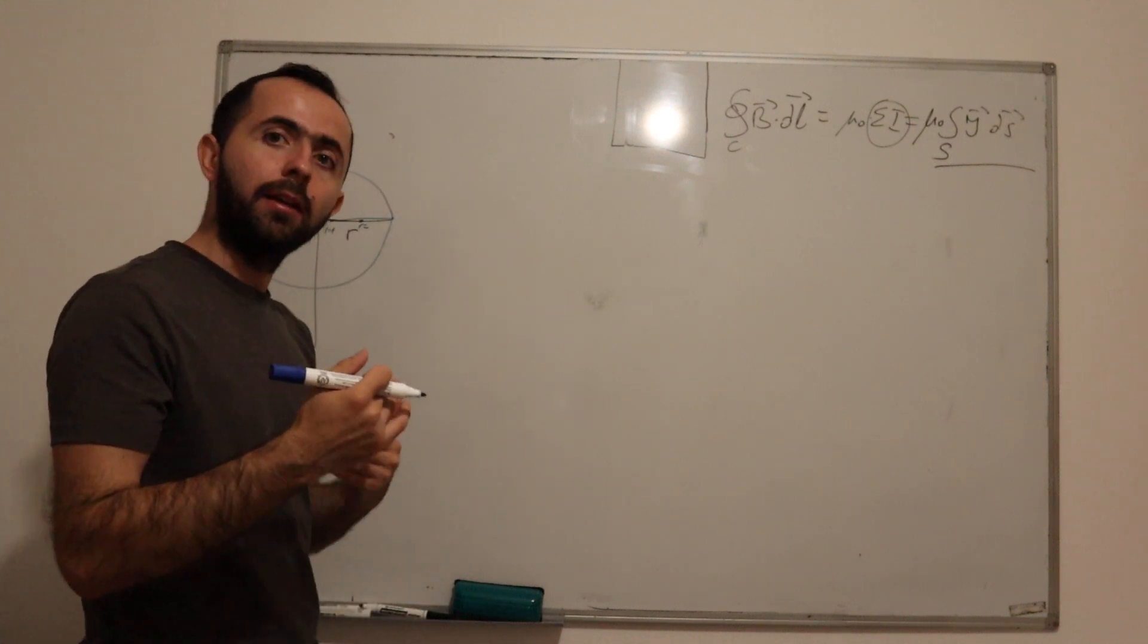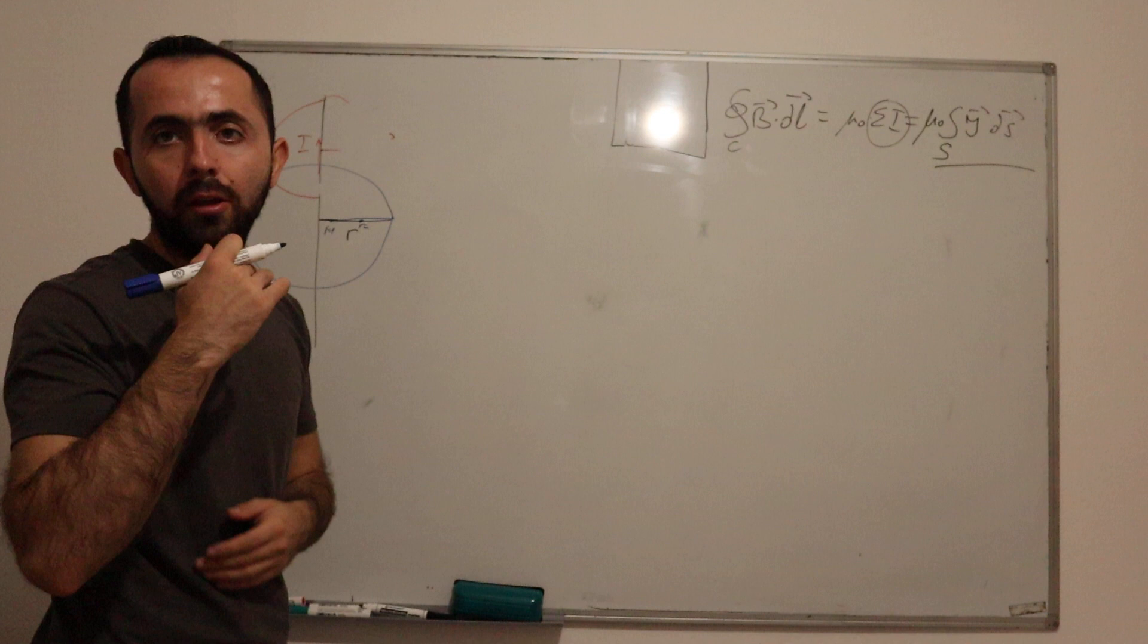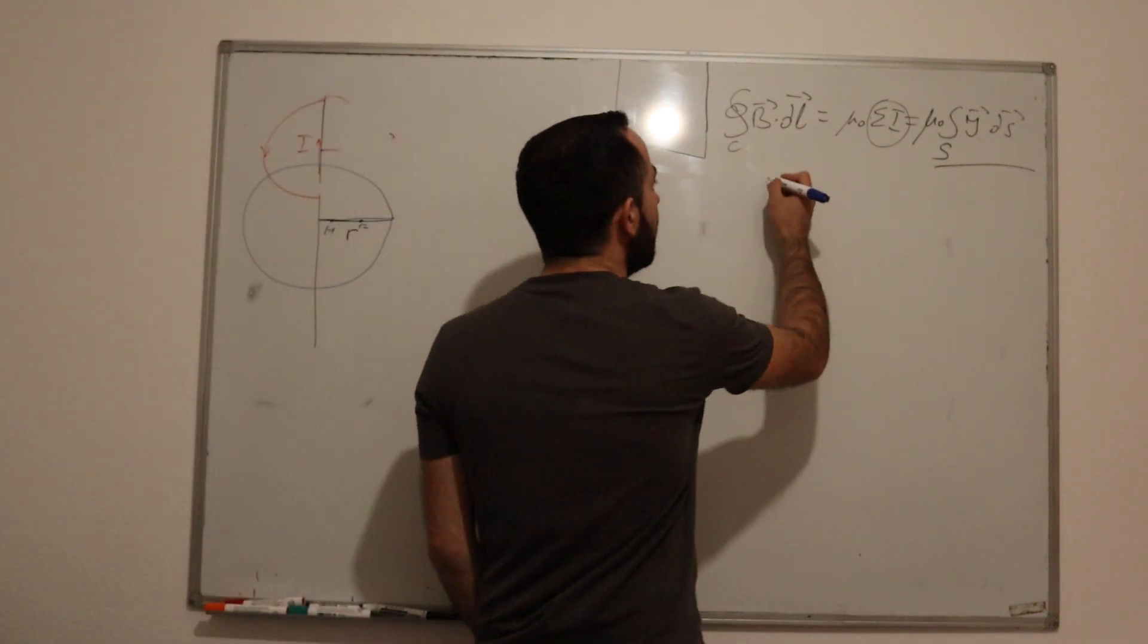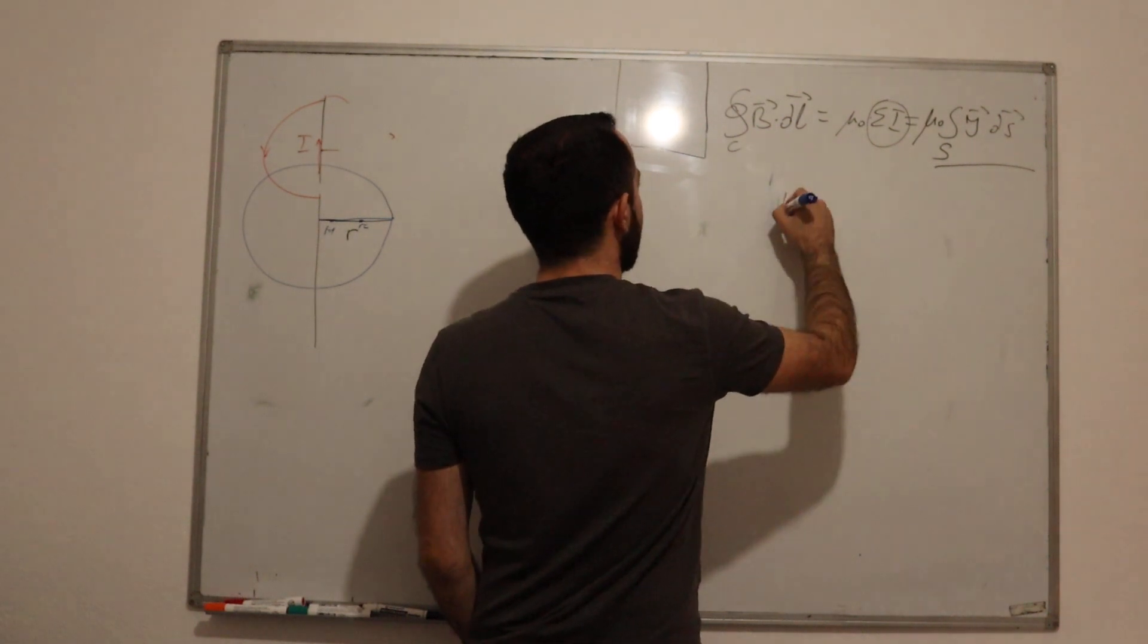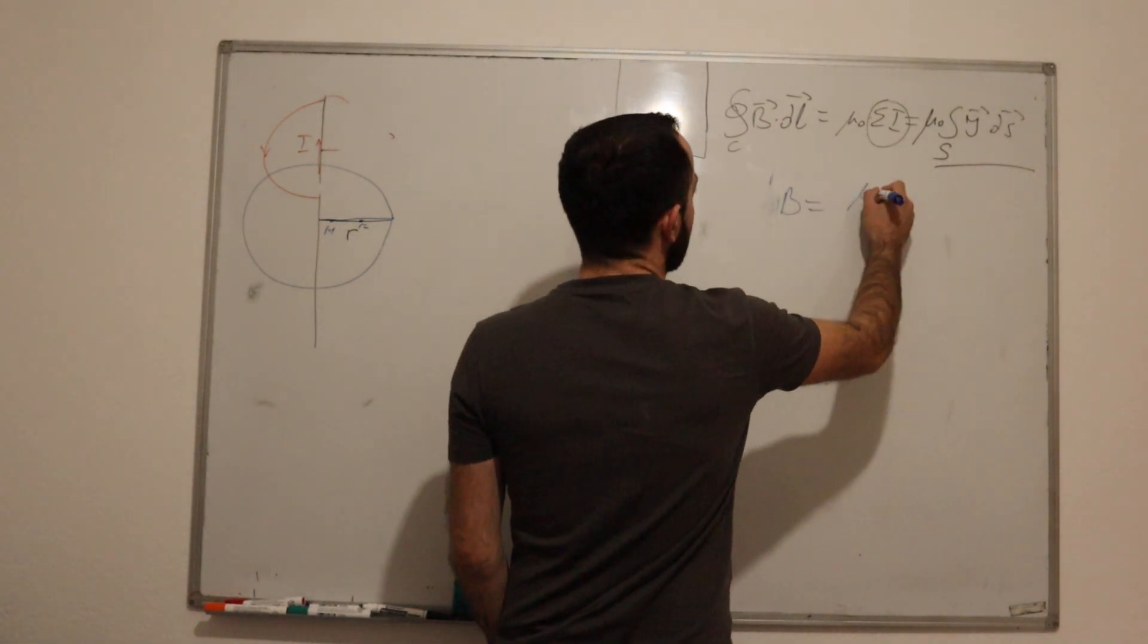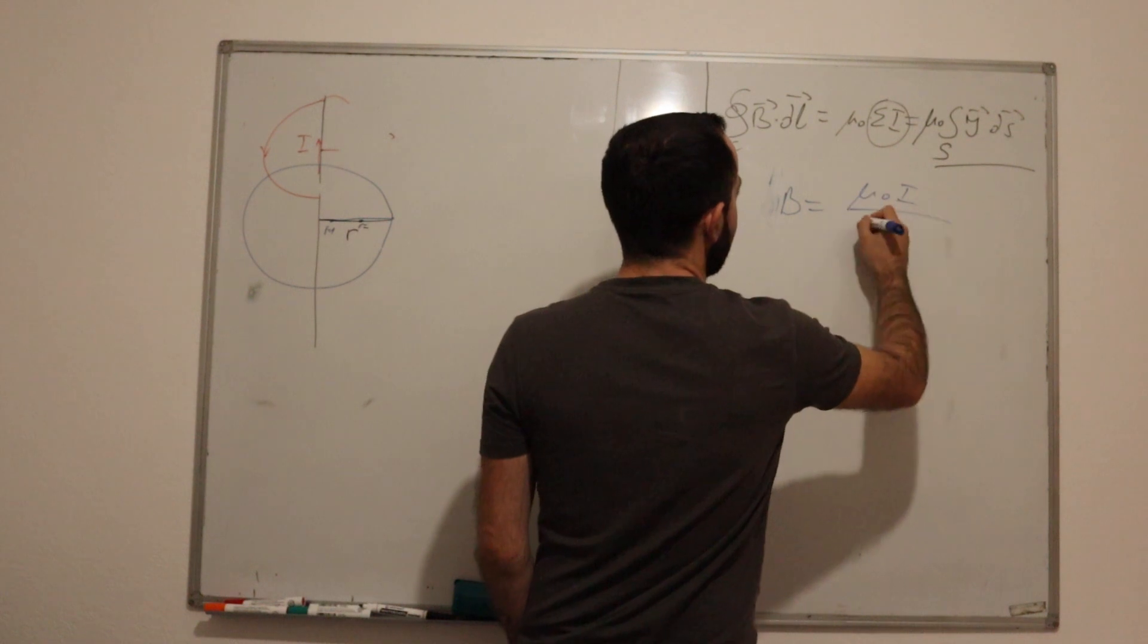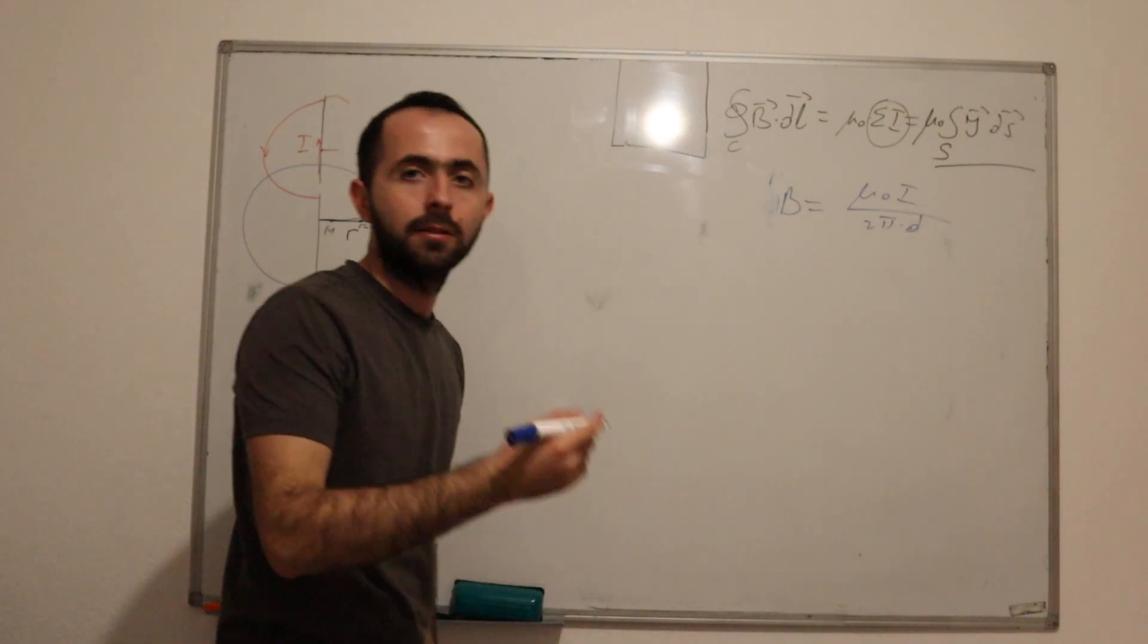And we already done that using Biot-Savart's law. And we know, we remember, that magnetic flux for infinitely long conductor at distance D is equal to this.